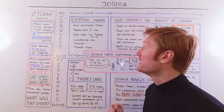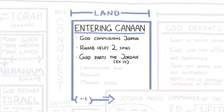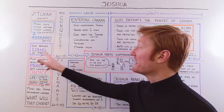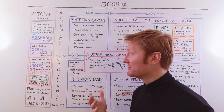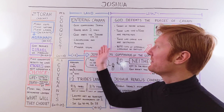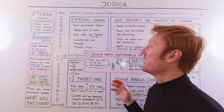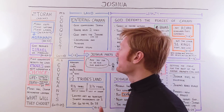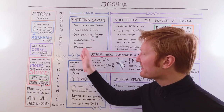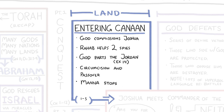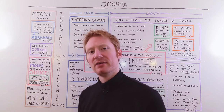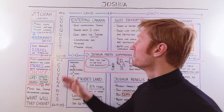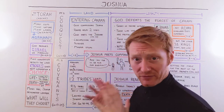The people of Israel commemorate by rededicating themselves to the covenant. The men are circumcised, and they observe the feast of Passover, which commemorates the time when God passed over the Israelites while judging the Egyptians back in Exodus. Once they start eating the food of the land of Canaan, the manna stops. Manna, if you're familiar with the Torah, was the miraculous bread from heaven that God fed the Israelites with. They get into the land, the manna stops, and they start enjoying the fruit of the land.